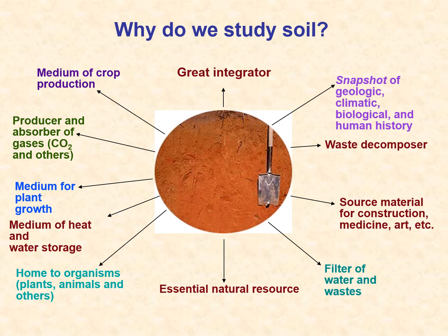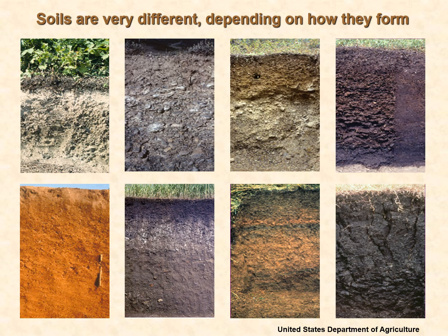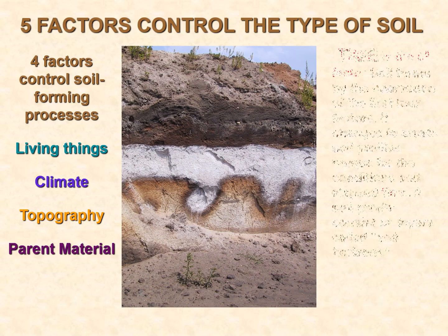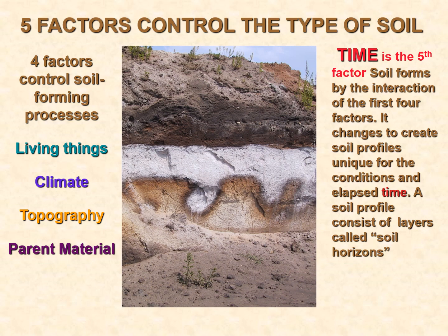Soil is very diverse and varies depending on different conditions. You can see here several types of soil — they differ in color. Basically five factors control the type of soil and the soil formation process: living things, climate, topography, parent rock material, and time. Parent rock material is deposited layer by layer.